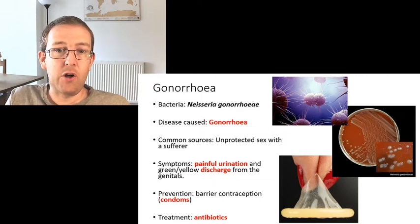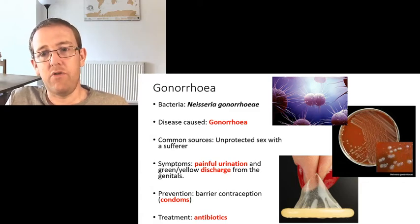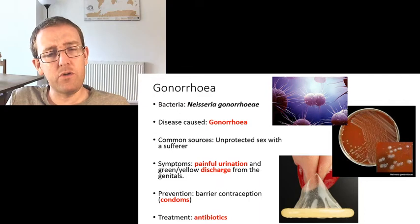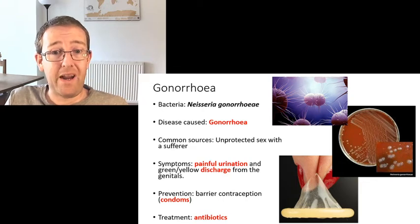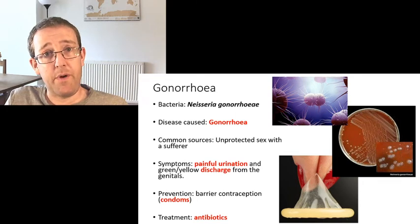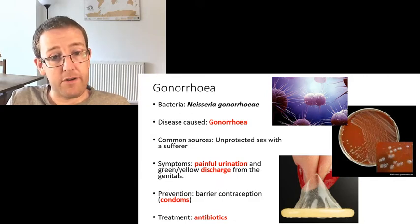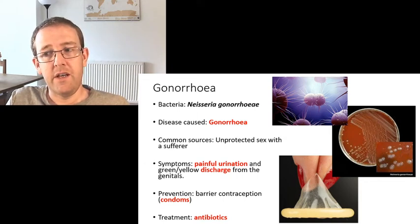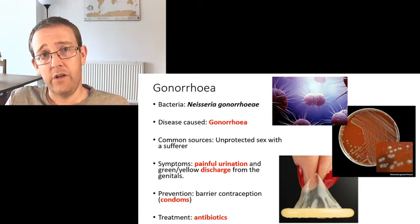The second one is gonorrhea. The bacteria is Neisseria gonorrhoeae - it causes gonorrhea, the name of the disease. It's had various slang names throughout history, 'the clap' being one of the most famous ones referenced in TV, film, and literature. You get it from unprotected sex with a sufferer. The symptoms are painful urination and a green-yellow discharge from the genitals, where the bacteria has colonized the genital tract, and it works the same in men and women.